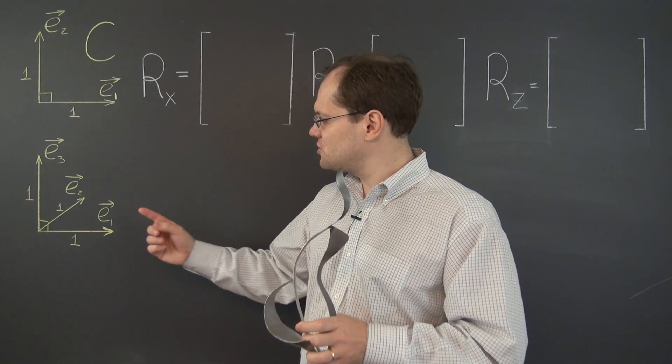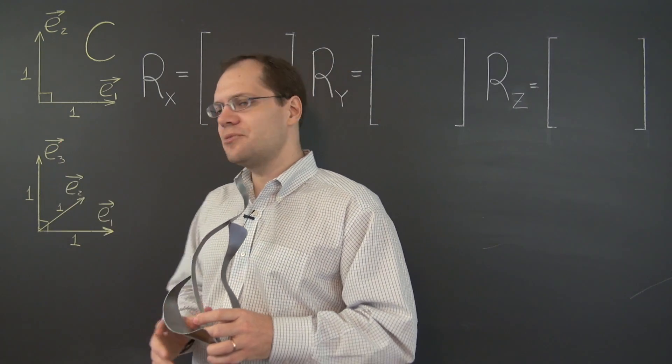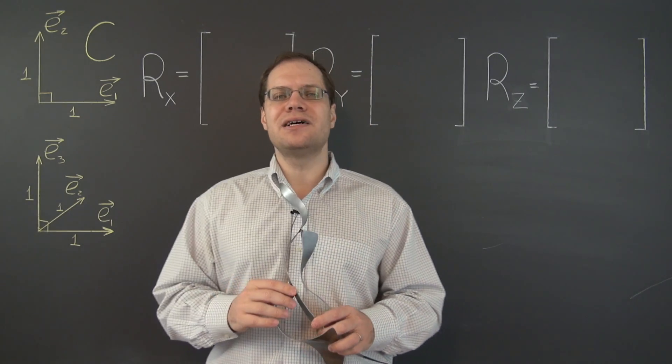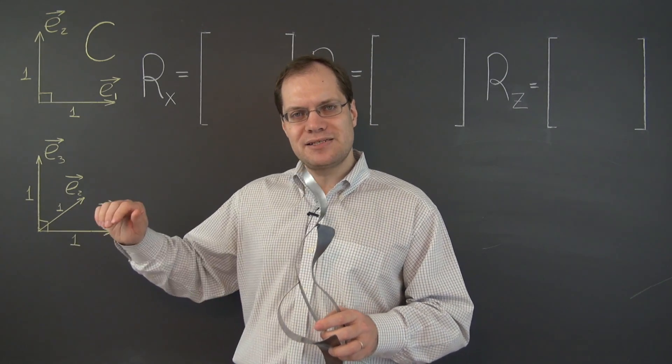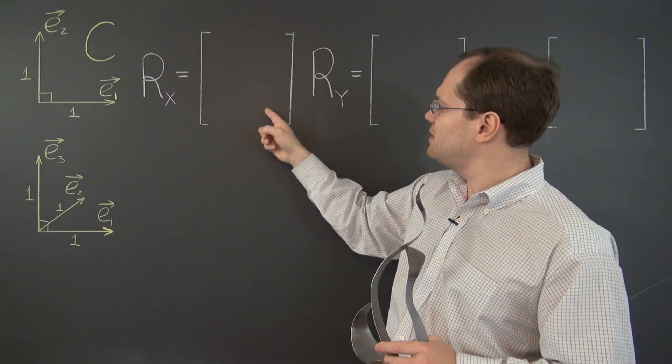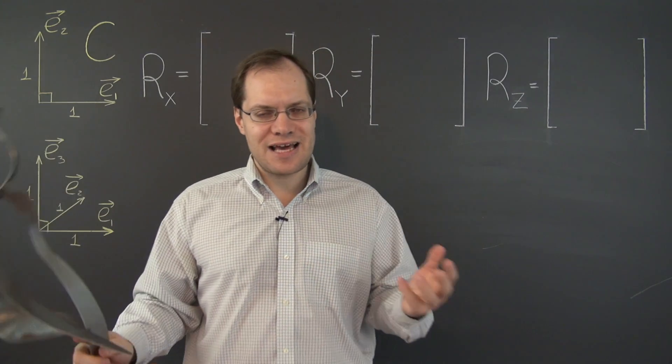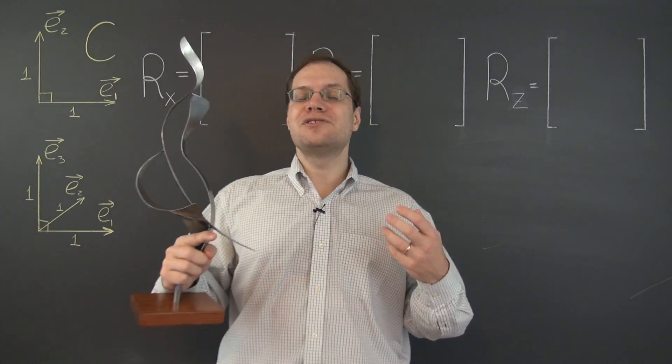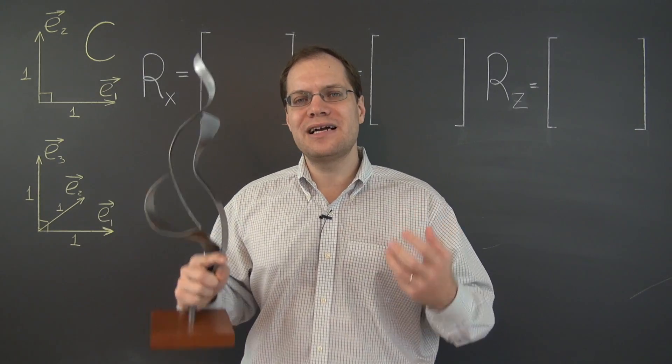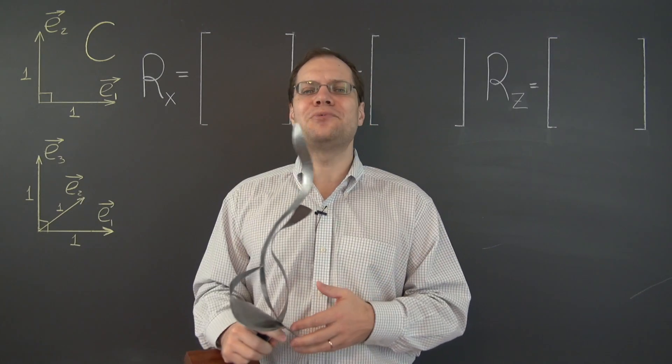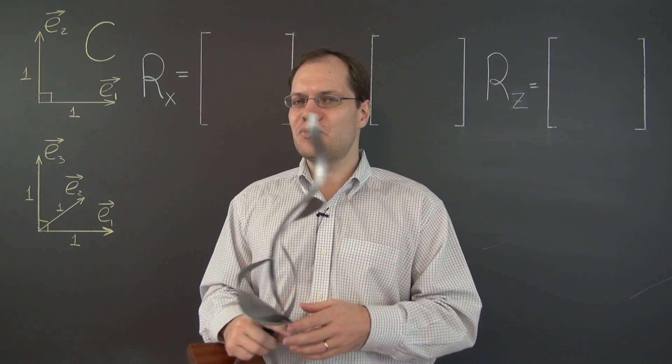Yes, we could pursue the standard procedure where we apply the linear transformation to each of the basis vectors, decompose the resulting images with respect to the same basis, and use those coefficients to populate the columns of the matrix. That's the standard approach, and it will work. However the result will be so impenetrably complicated that we won't find it useful at all. It will provide us with no insight whatsoever.